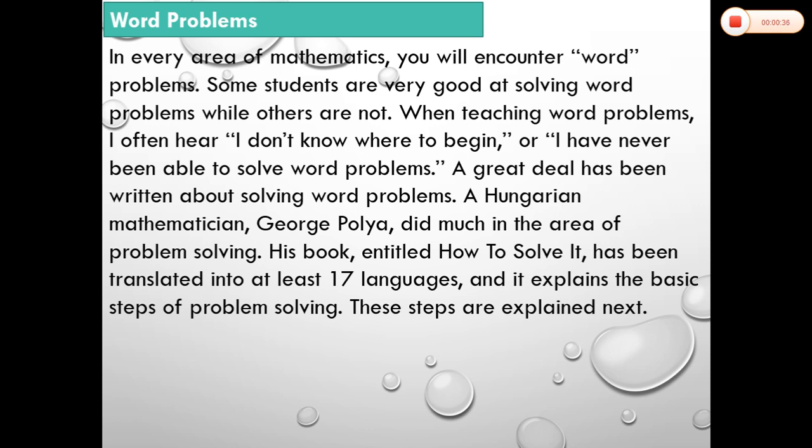A Hungarian mathematician, George Polya, did much in the area of problem solving. His book entitled 'How to Solve It' has been translated into at least 17 languages and it explains the basic steps of problem solving. These steps are explained next.